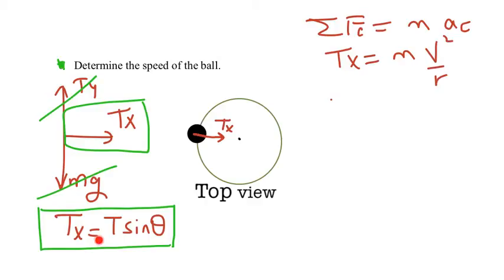Let's remember Tx from the previous question. Tx is T sin theta. Let's put that in there. I'm going to choose this one. T sin theta equals M. We already figured out M. M is T cosine theta over G. And V squared over R.